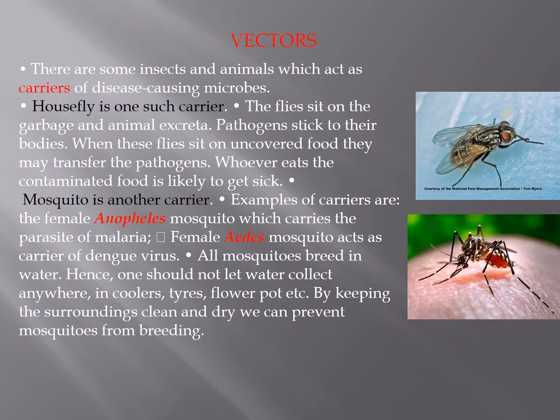Now, moving to your syllabus: vectors. There are some insects and animals which act as carriers of disease-causing microbes. They are known as biological vectors. A common example is the housefly. Flies sit on garbage and animal excreta, and pathogens stick to their bodies. When these flies sit on uncovered food, they may transfer the pathogens, and whoever eats the contaminated food is likely to get sick.